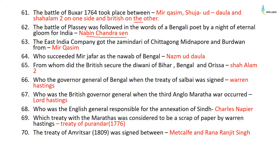The English factory seized by Siraj ud-Daulah before marching into Calcutta was Kasim Bazar. The account of 146 Englishmen confined in a small room and dying of suffocation in the Black Hole episode was given by Holwell. Calcutta was renamed Alinagar after its capture by Siraj ud-Daulah on June 1, 1756. The Treaty of Alinagar 1757 was signed between Robert Clive and Siraj ud-Daulah. The Battle of Plassey took place on June 23, 1757. The traitors to Siraj ud-Daulah were Mir Jafar and Rai Durlabh.